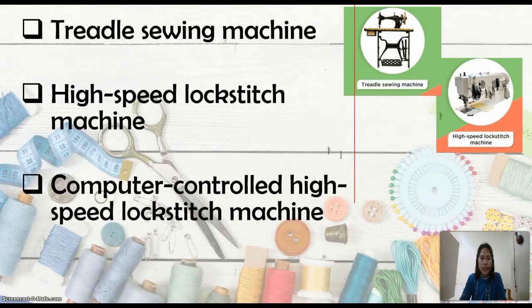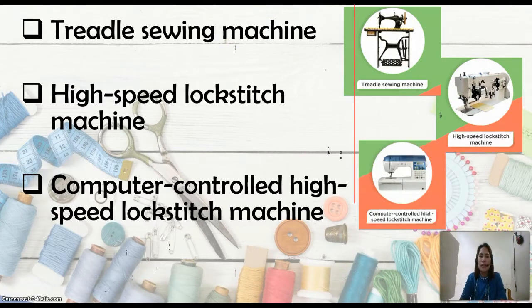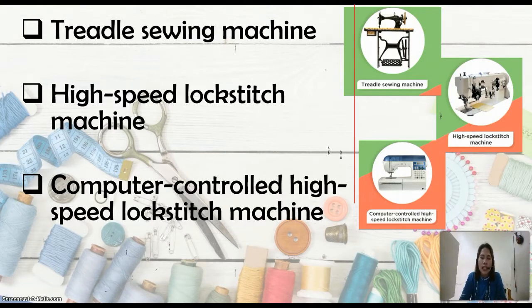The computer-controlled high speed lock stitch machine is a modern sewing machine equipped with an advanced computer-controlled system. When using this machine, it is automatic — you just set the stitch length in centimeters or millimeters, the stitch width, and what kind of stitch to use. You set everything on the computer-controlled machine and it will sew by itself. Of course, you need to set everything before it begins sewing.